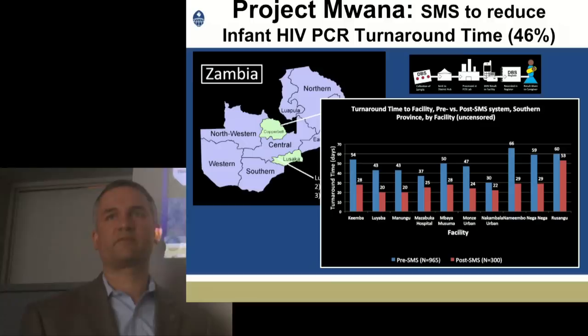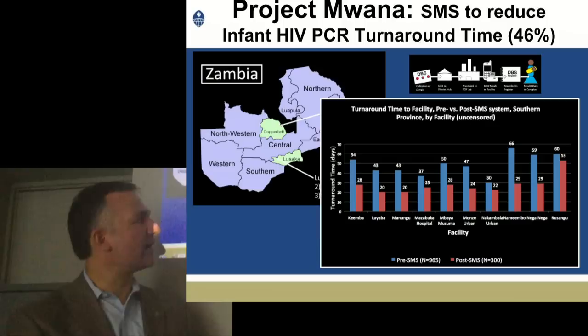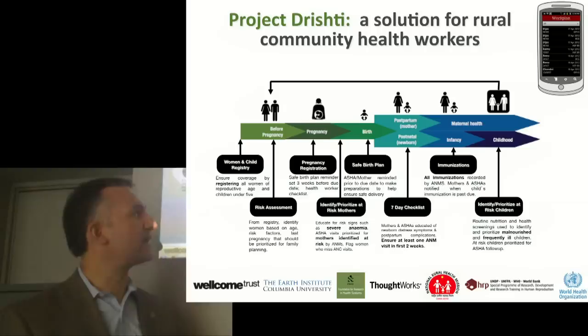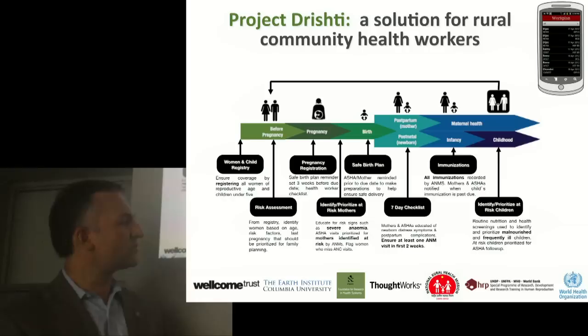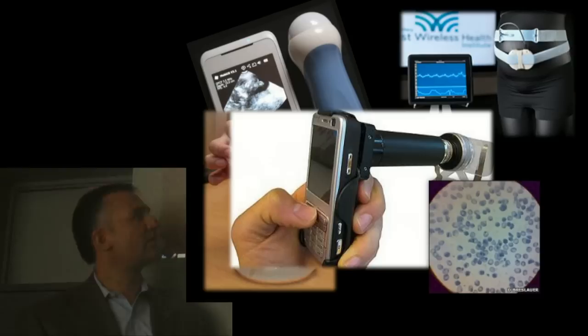Our colleagues at Stanford have developed an attachment to simple camera phones allowing frontline health workers to look for early signs of cancer in individuals exposed to chewed tobacco and other oral pathogens. Our colleagues at the Garmin Foundation developed MoTeC, which supports frontline health workers and connects them to the patients they're serving. The project Moana in Zambia shows the compression of time, where infant HIV PCR testing turnaround time has been reduced by about half by enabling results to be sent back to frontline clinics through secured text message systems. More ambitious systems enabled by WHO HRP and the National Rural Health Mission in India have tried to cover the entire continuum of care from pre-pregnancy through childhood, with risk assessment, safe birth planning, postnatal checklists, immunizations, and childhood care — all in a modular basis on a smartphone.